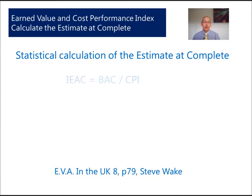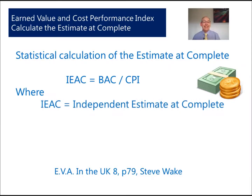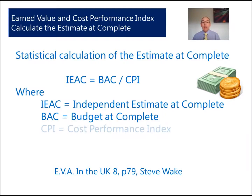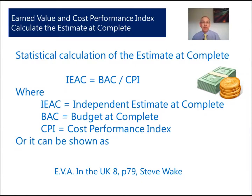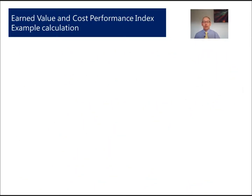So we know the budget at complete — sixteen thousand pounds previously — and we know our CPI of 0.89. We want to do a statistical calculation of the estimate at complete, called the IEAC (independent estimate at complete). The formula is: IEAC equals budget at complete divided by CPI, or alternatively, estimate at complete equals budget at complete divided by CPI. This is referenced in both EVA in the UK by Steve Wake and The Earned Value Management Maturity Model by Ray Stratton.